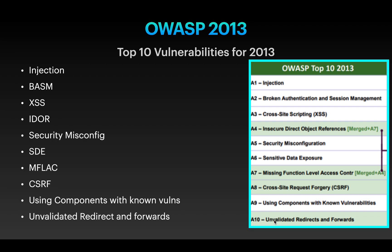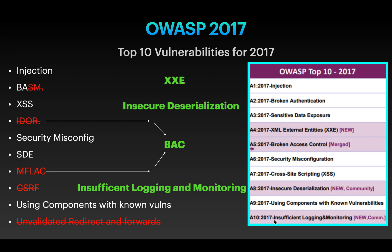Now let's see OWASP 2017 and what has changed. As you can see on your screen, the OWASP Top 10 2017 has some significant changes. The first vulnerability, Injection, remains the same. Broken Authentication and Session Management from 2013 has been changed to just Broken Authentication. XSS is still present in 2017. IDOR has been removed and merged with Missing Functional Level Access Control into Broken Access Control (BAC).